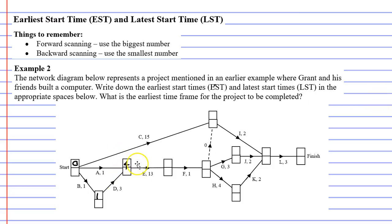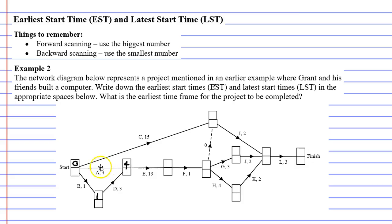So why do we pick the bigger number? Grant and his friends are building this computer, so one friend could complete activity A while another completes activities B and D. Activity E cannot start until all preceding activities are complete. So even though one friend might finish in one minute, activity E still has to wait on the other friend who takes four minutes. So we put the larger time in.